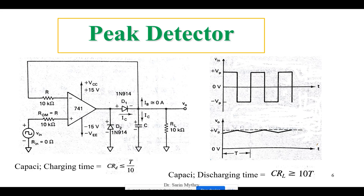Why do we need to use the peak detector? Because we already have one kind of device which can detect the peak — that device is called an AC voltmeter. The AC voltmeter can find out the maximum and minimum AC voltage. But even having that, why are we going for this peak detector? We have an AC voltmeter which is used for detecting peak voltages.